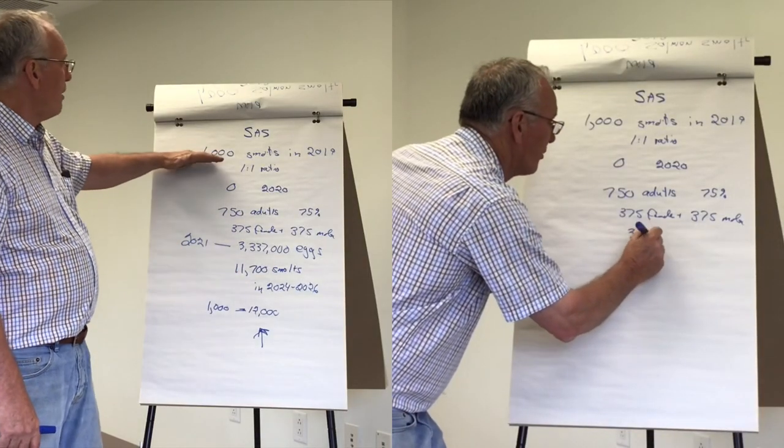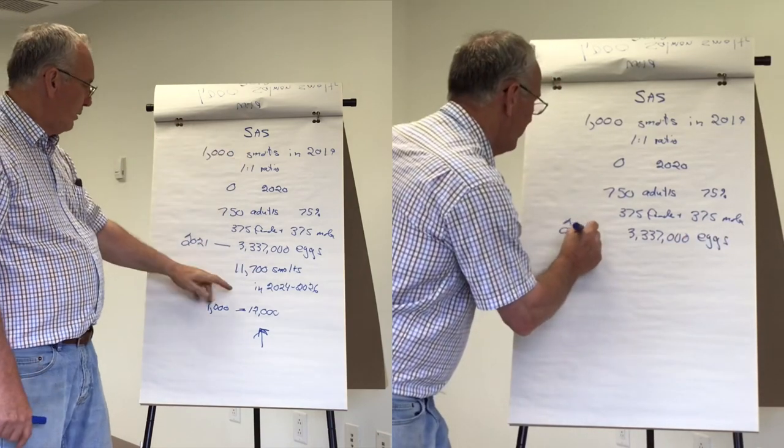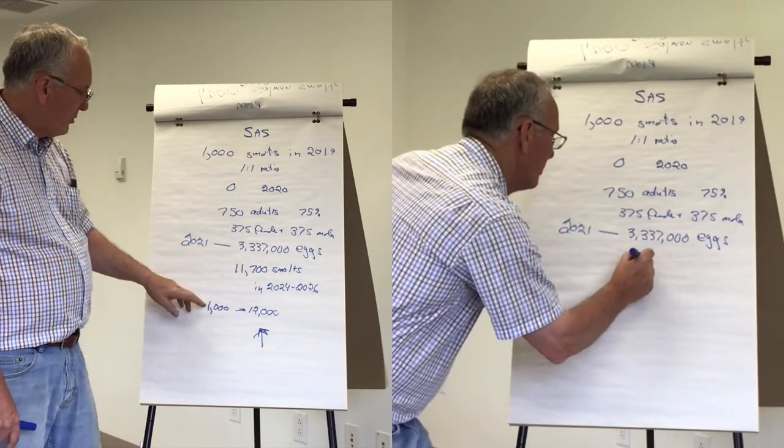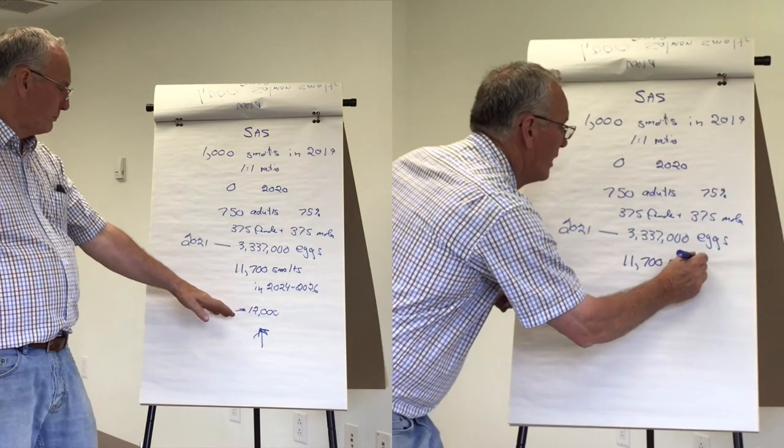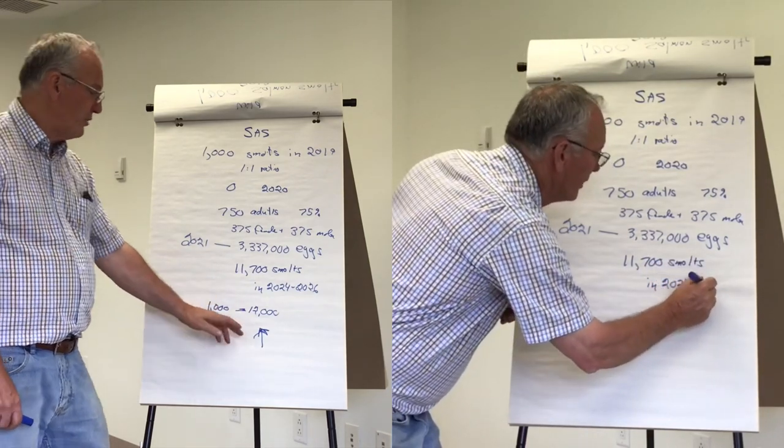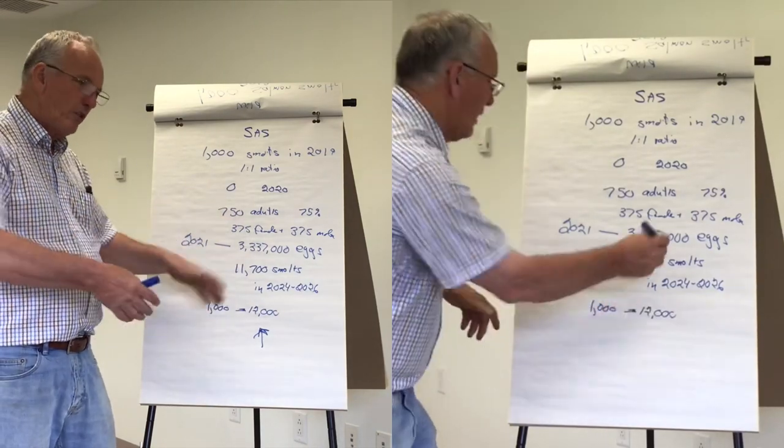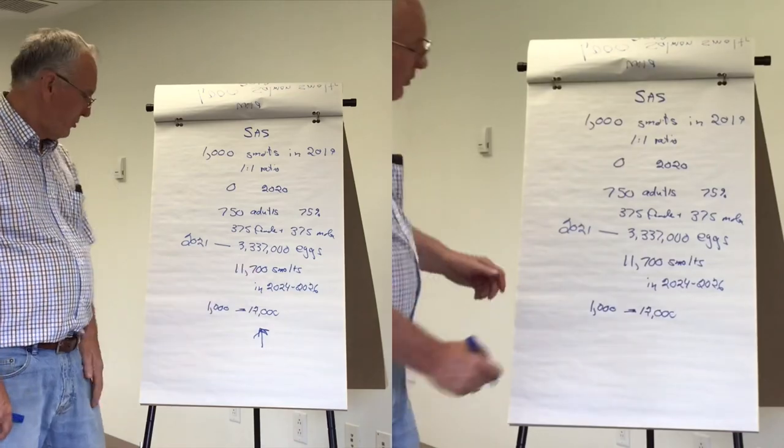So we start off with 1,000 smolts. We put the adults in, we're producing 11,700 or approximately 12,000 smolts. So what we have is an increasing population. Start off with 1,000 and through natural selection, we'll end up with 12,000.